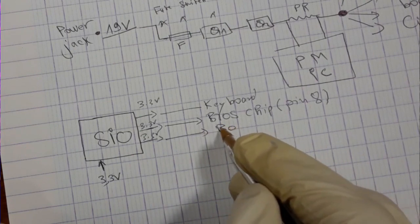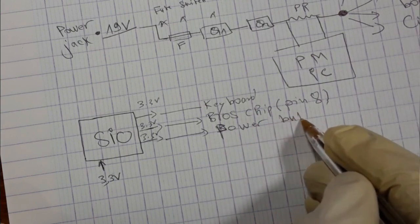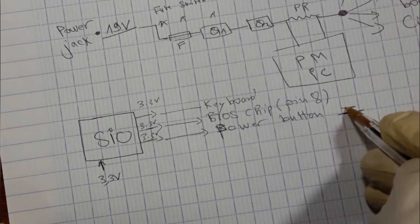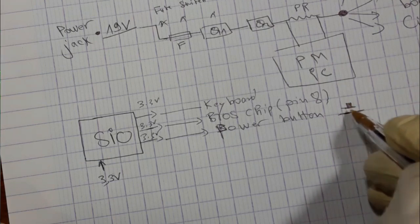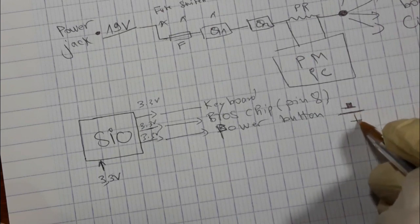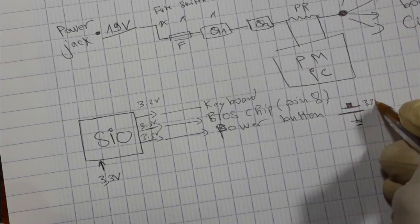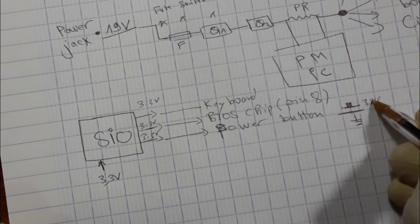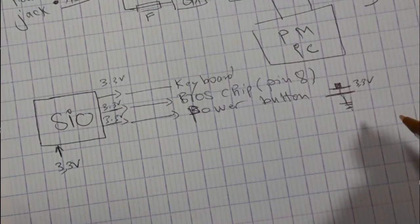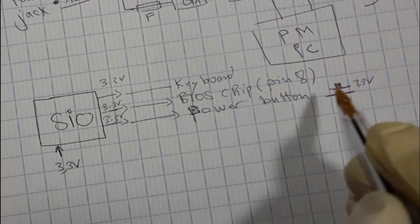The SIO gives 3.3 volts to the power button. When you press the power button, here for example connected to the ground and here 3.3 volts, when you press the power button the 3.3 volts goes to ground and then the computer will be powered on. The SIO gives 3.3 volts to the power button.